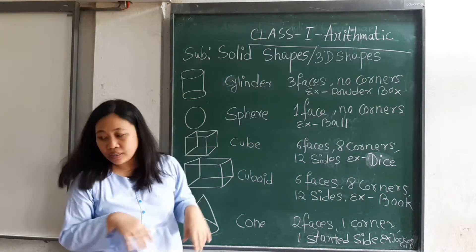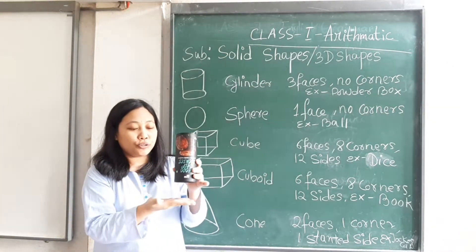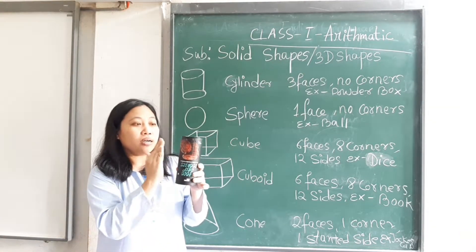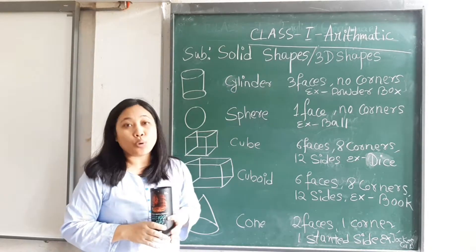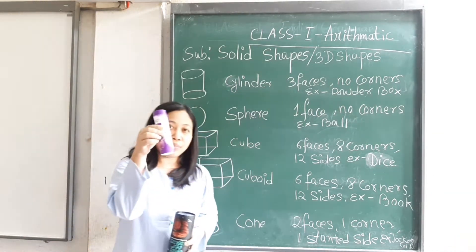First of all, cylinder. Now cylinder has three faces: one, two, three - a curved face and no corners. Example: powder box. Where is the powder box?